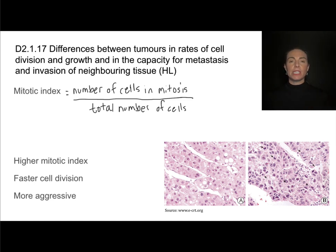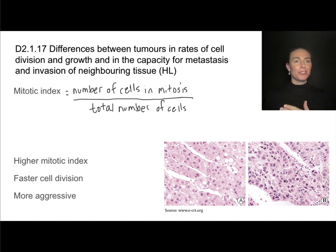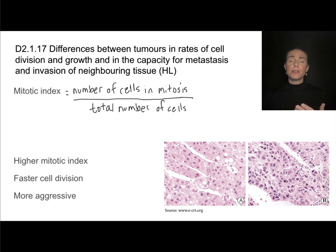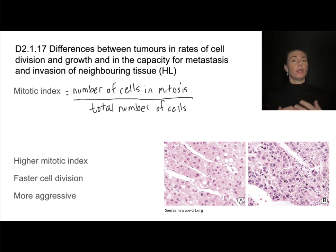Theme D is continuity and change — continuity being whether we can get that DNA passed along to the next generation in those daughter cells, and change being some of the ways in which cell division can go awry. Please do keep an eye on that thematic approach.